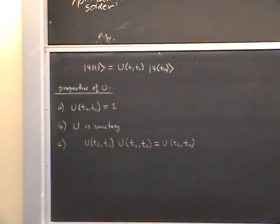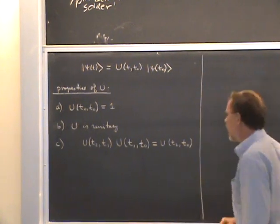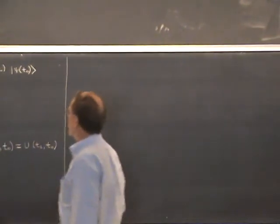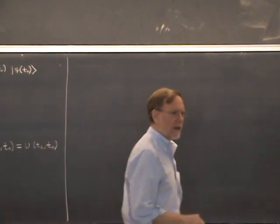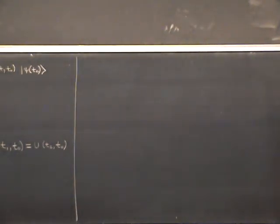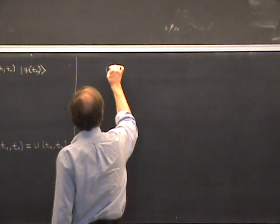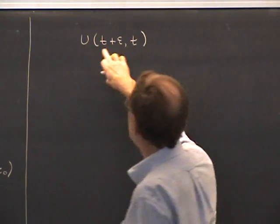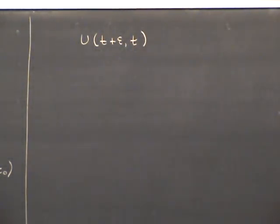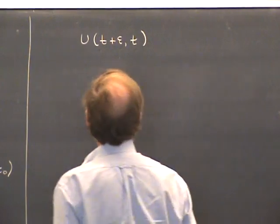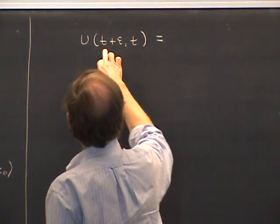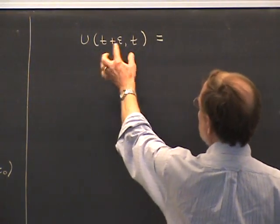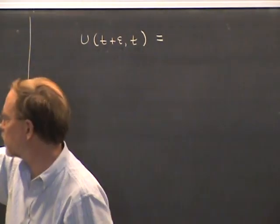Those are our three principal requirements on the unitary time evolution operator U. Now let's look at what happens over an infinitesimal time. Consider U(t + epsilon, t). You can expand this in a power series in epsilon. The leading term is given by setting epsilon to zero, which gives U(t,t) = 1 by the initial condition. So the leading term is 1.